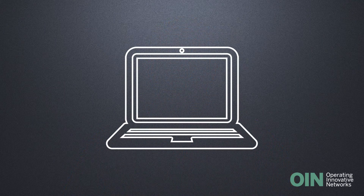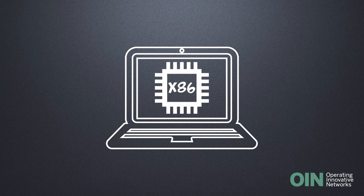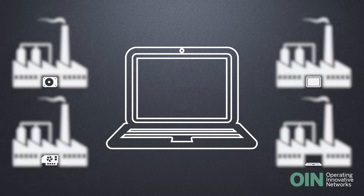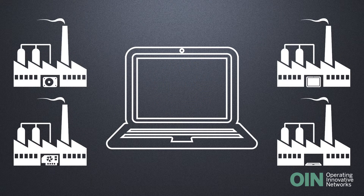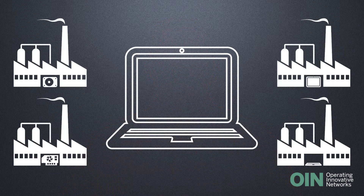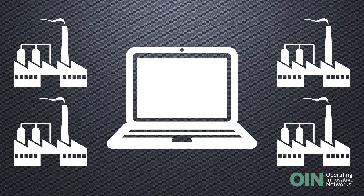Network disaggregation works much like customizing computers does. In the computing world, all computers work on a standardized hardware architecture, x86, which is used across all vendors, but chipsets and software can be customized to fit the user's needs. Users can pick whichever software they need, such as Linux or Windows, and whichever hardware they want from whichever vendor they choose, such as Dell, Asus, and HP.